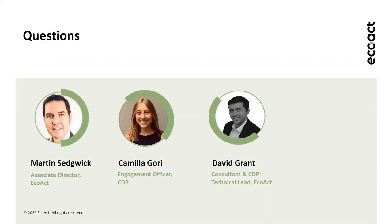Camilla has a little bit more information on the scoring methodologies. The methodologies for water and climate change would be released at the end of March, whereas the methodology for forests would be ready at the beginning of April.